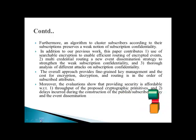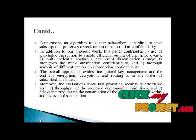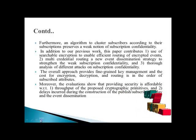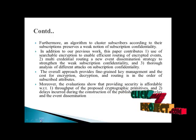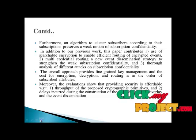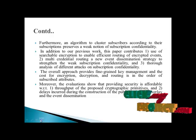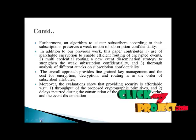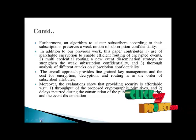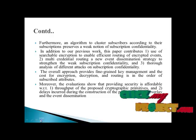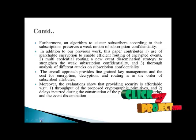The overall approach provides fine-grained key management, and the cost of encryption, decryption, and routing is in the order of subscribed attributes. Moreover, evaluations show that providing security is affordable with respect to the throughput of proposed cryptographic primitives and delays incurred during the construction of the publish and subscribe system overlay and event dissemination. This is the concept of the overall process.